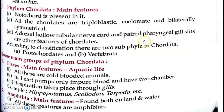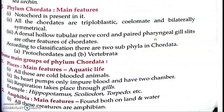Ab yahan par paired pharyngeal gill slits ke baare mein batate hain — yeh Chordata ka bahut main important feature hai. Pharyngeal gill slits ek opening hoti hai, jaise chhote-chhote chhed hote hain, usi type ki opening hoti hai pharynx aur throat ke beech mein. Pharynx jo hoti hai — aapke gale mein pharynx hoti hai, wahan par opening hoti hai jo bahar ki taraf open hoti hai. Toh yeh basically chhed jaisi structure hoti hai.